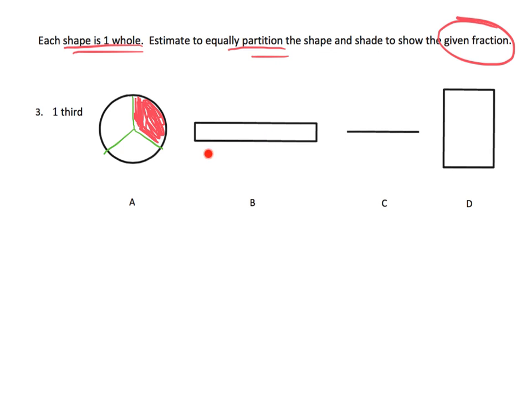And then let's do this piece. So remember, we want to cut it into three equal pieces, which means we're only going to use two lines to create our three equal pieces. And then we're supposed to shade in one third. So let's shade in this one.